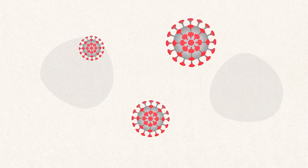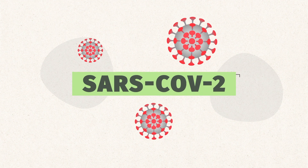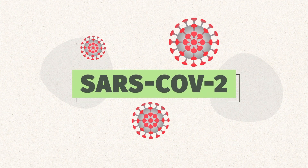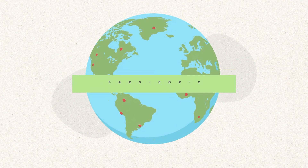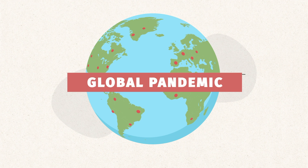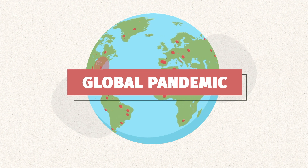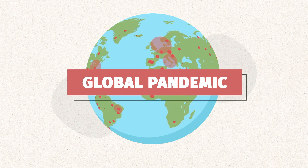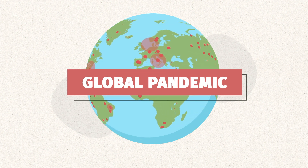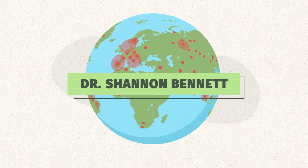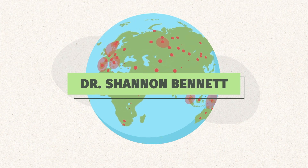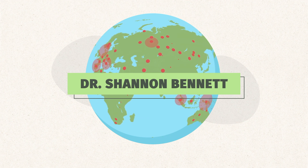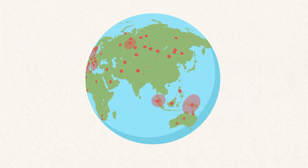COVID-19 is an infectious disease caused by a virus known as SARS-Coronavirus-2. This disease has been classified as a global pandemic. In this video, WikiHow will interview expert virologist Dr. Shannon Bennett to learn about the properties of this virus and how it affects your body.